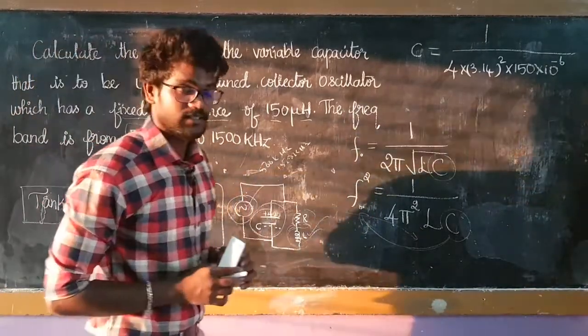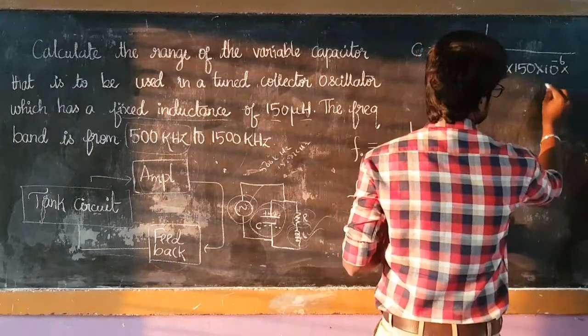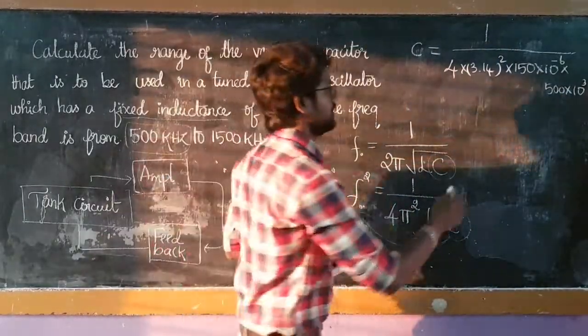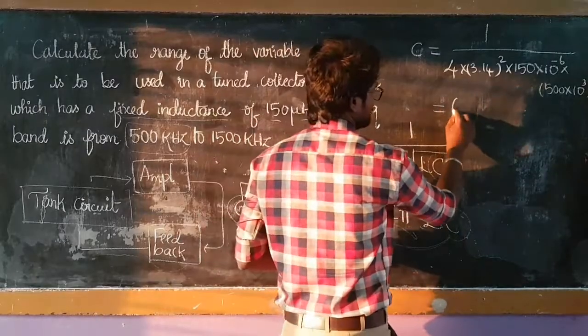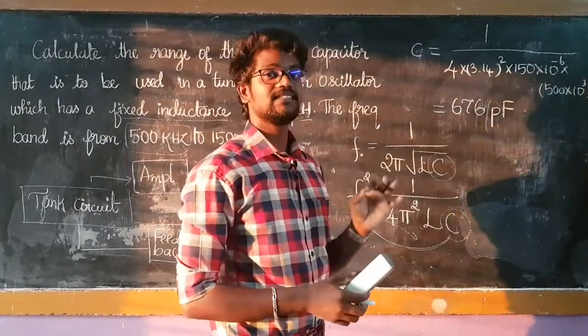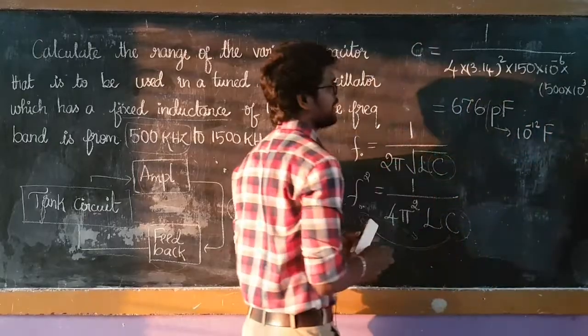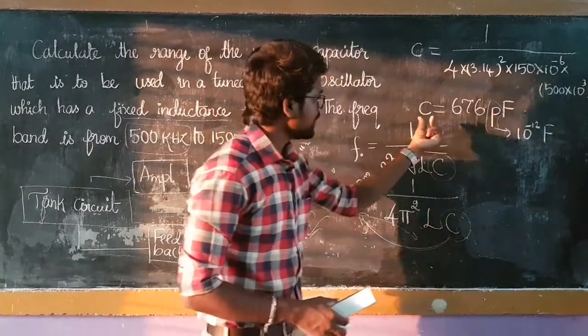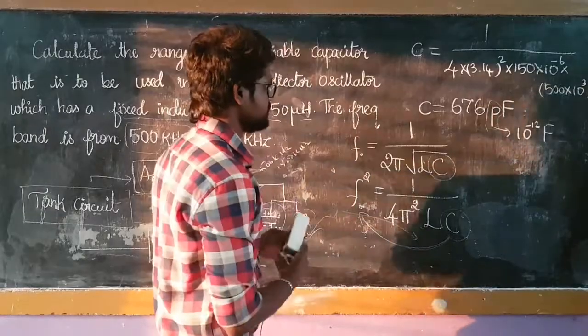For 500 kHz, C equals 1 by 4 into 3.14 squared into 150 into 10 to the power minus 6 into 500 into 10 to the power 3 squared. After calculation, we get the value of 676 pF. So the value of capacitance at 500 kilohertz is 676 picofarad.